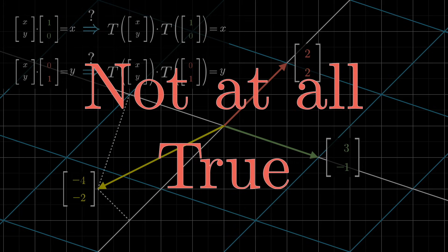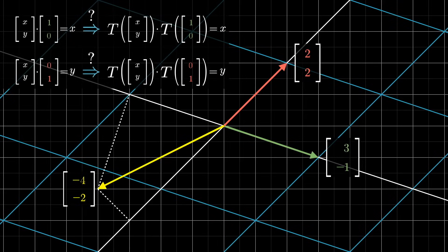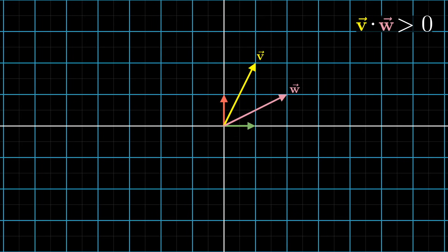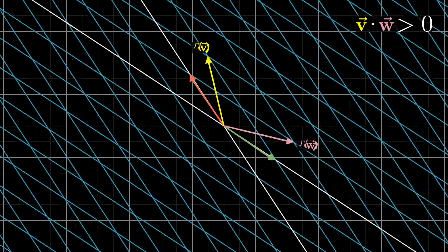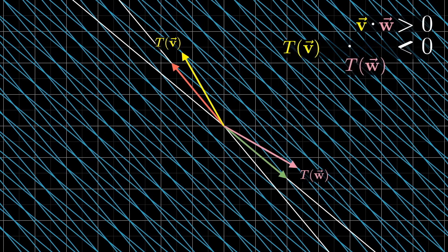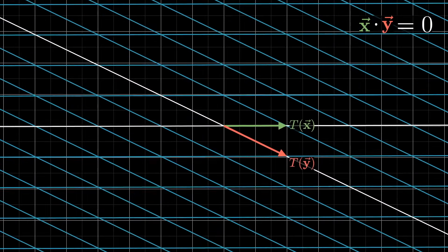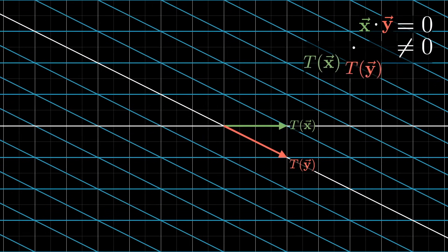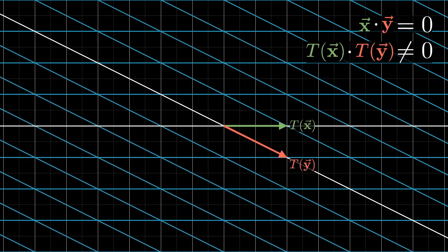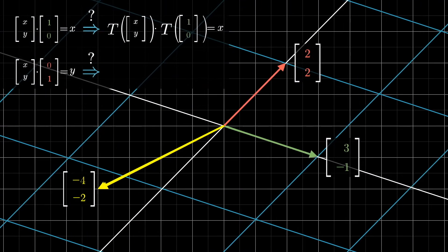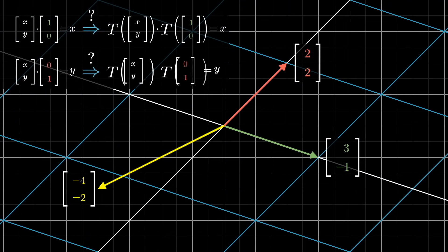It's not at all true. For most linear transformations, the dot product before and after the transformation will look very different. For example, you could have two vectors generally pointing in the same direction with a positive dot product, which get pulled apart from each other during the transformation such that they end up having a negative dot product. Likewise, things that start off perpendicular with dot product zero, like the two basis vectors, quite often don't stay perpendicular to each other after the transformation — they don't preserve that zero dot product. And looking at the example shown, dot products certainly aren't preserved; they tend to get bigger, since most vectors are getting stretched out.